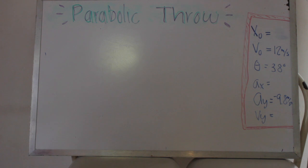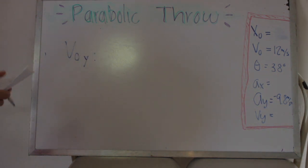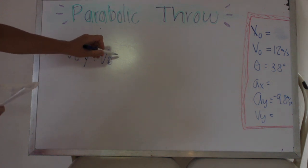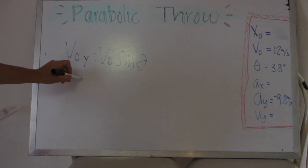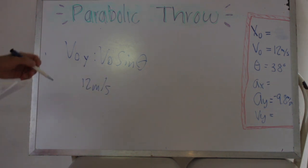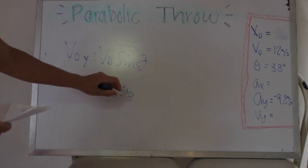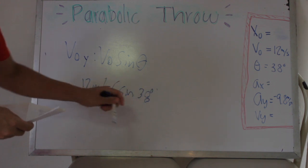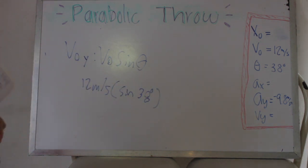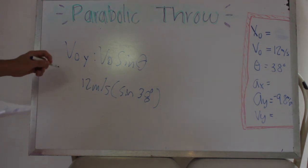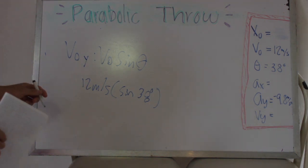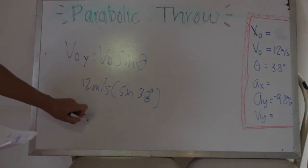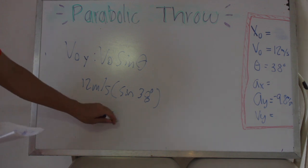The next step is getting the initial velocity of Y by using this equation: initial velocity multiplied by sine of the angle. With our data, the initial velocity is 12 meters per second, and we multiply it by the sine of 38 degrees. The result is 7.38 meters per second.